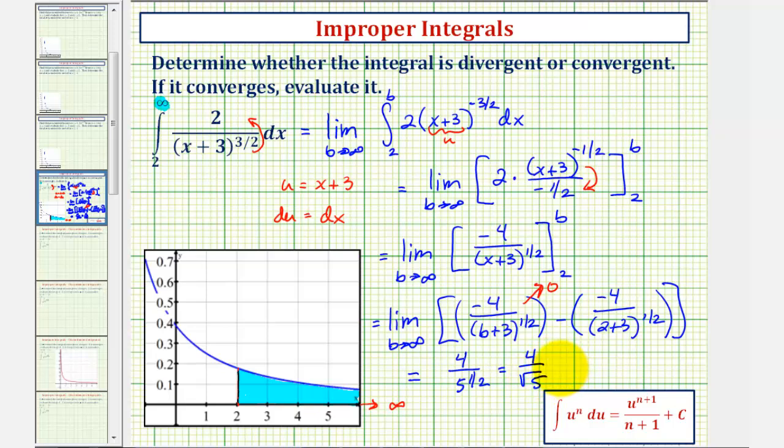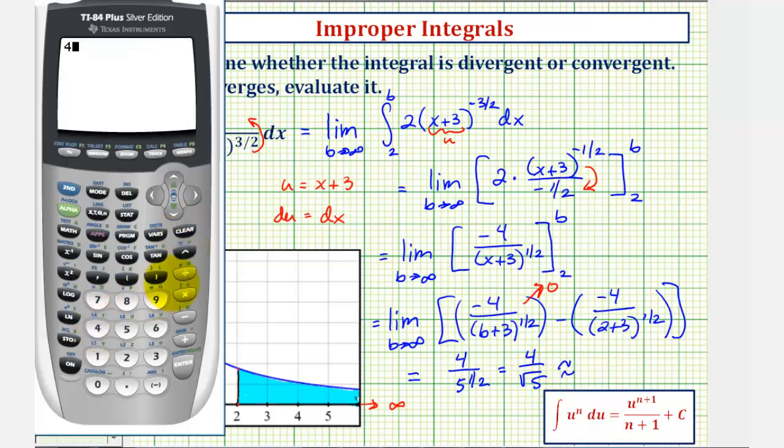Let's also get our decimal approximation. 4 divided by square root 5 is approximately 1.7889.